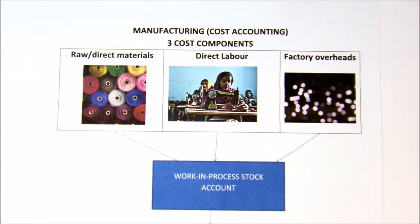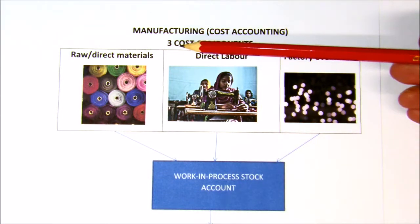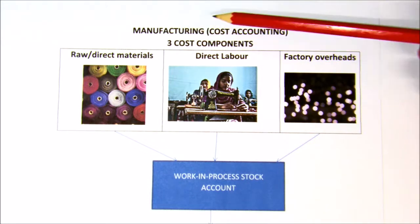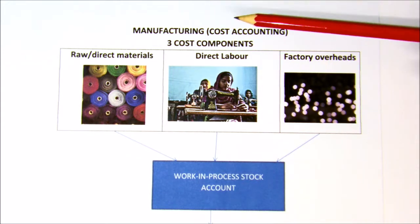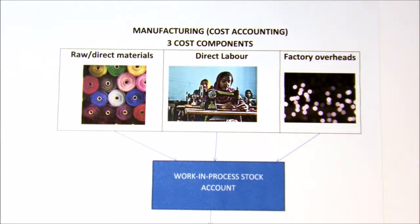Up to this point you've been dealing largely with retailers. A retailer will buy their trading stock and then sell it. In this section we're looking at cost accounting or manufacturing, where we are actually going to be making the goods. The cost of that manufacturing needs to be determined. If you were buying t-shirts from somebody else you would know exactly what the cost was, but if you are making them it's not as clear, so you have to bring into account the various costs that go into making that item. Largely we have three different cost components.